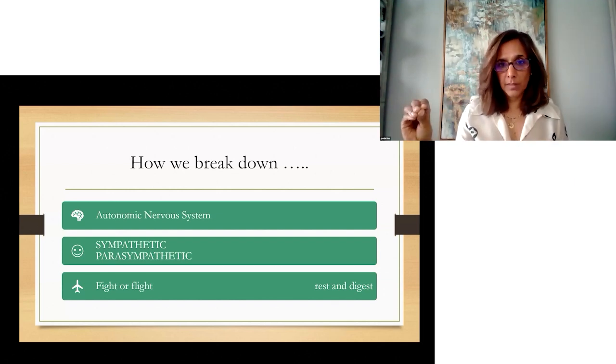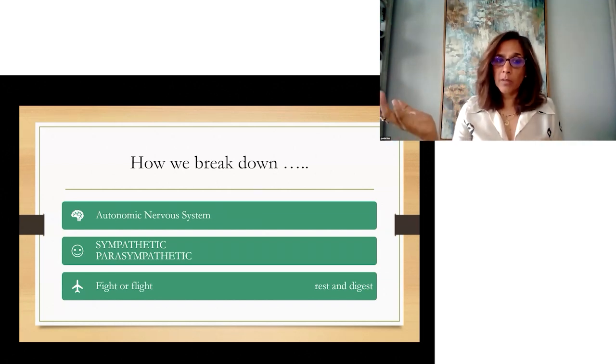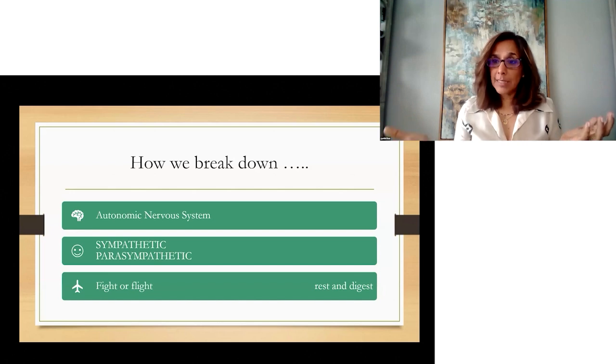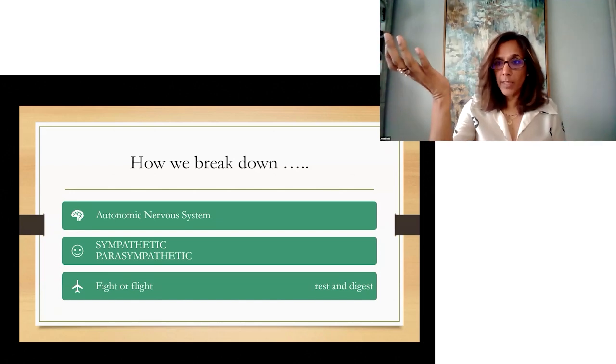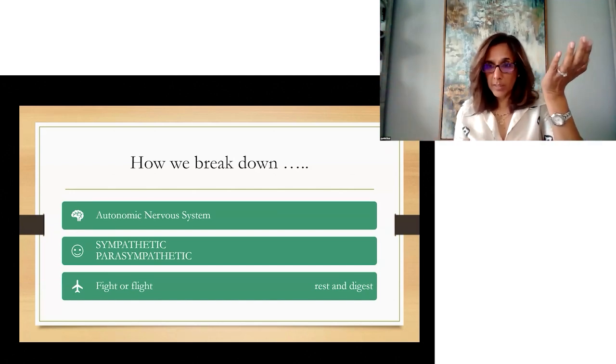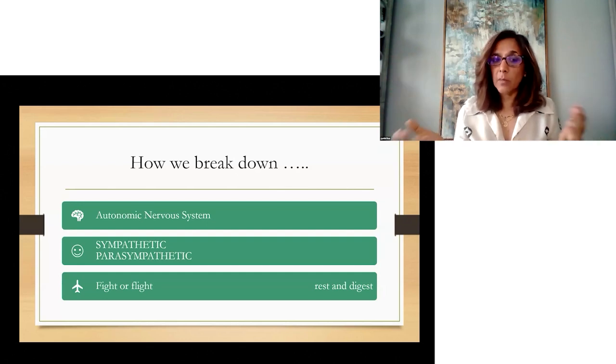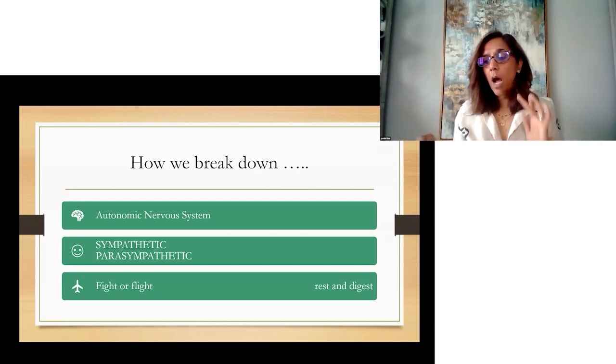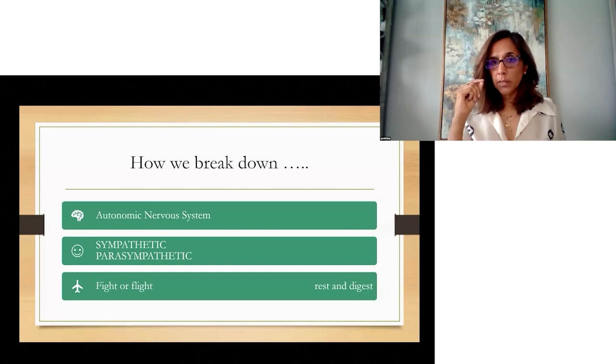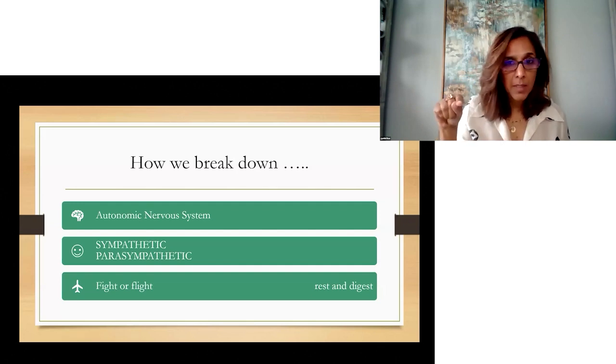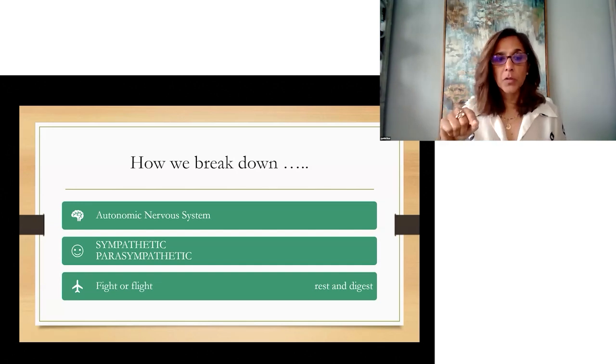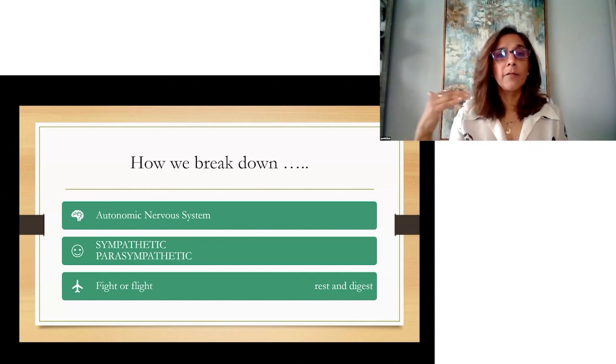We have another area of how we break down, and that's called the autonomic nervous system. The autonomic nervous system is really about the nervous system that is sympathetic, which is fight or flight, and the parasympathetic, which is rest and digest. This nervous system is not volitional, which means I don't control it. It's subject to the stressors in my life and what I'm exposed to.